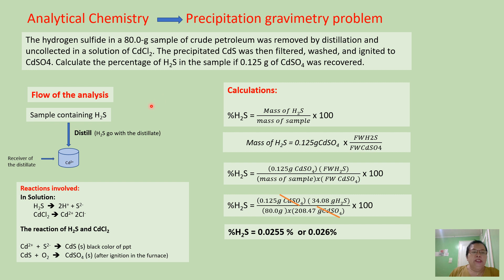This is the flow of the analysis. Our sample contains a trace amount of hydrogen sulfide. We separate hydrogen sulfide from crude petroleum by volatilization technique — specifically, distillation. We use distillation because hydrogen sulfide is a volatile substance, and during distillation, the hydrogen sulfide volatilizes together with the distillate.